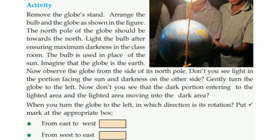When you turn the globe to the left, in which direction is its rotation? Put a tick mark at the appropriate box. If you turn the globe to the left, it rotates from west to east.